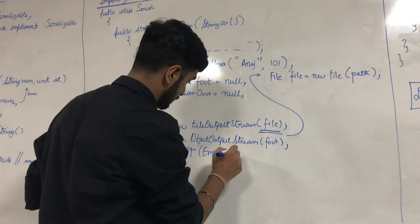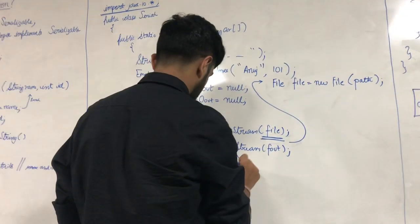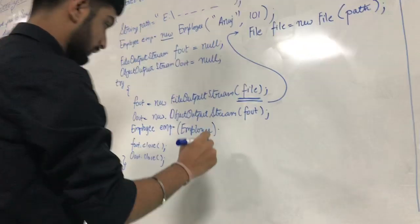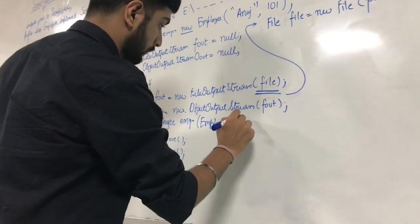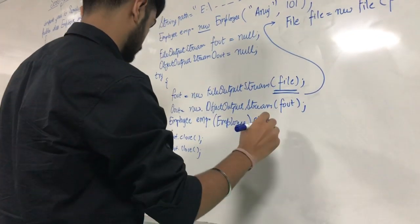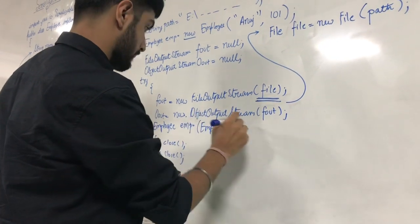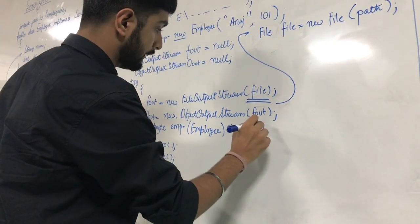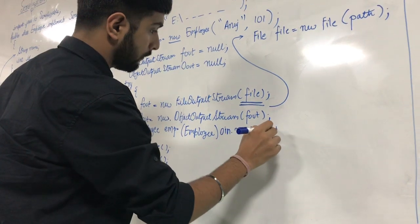So, downcasting is done: employ = (Employ) oin.readObject.